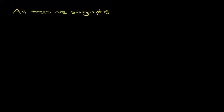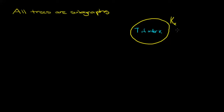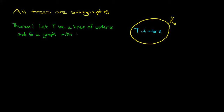We're going to look at the fact that all trees are subgraphs. This is actually much more straightforward than it may seem, because any tree of order k is definitely a subgraph of the complete graph of order k. The complete graph of order k has every vertex of degree k minus 1. The theorem we'll show is more general: let t be a tree of order k and g a graph with minimum degree at least k minus 1. Then g contains a subgraph isomorphic to t.